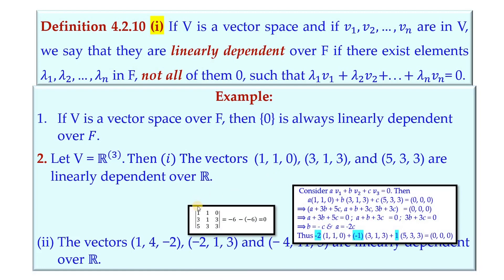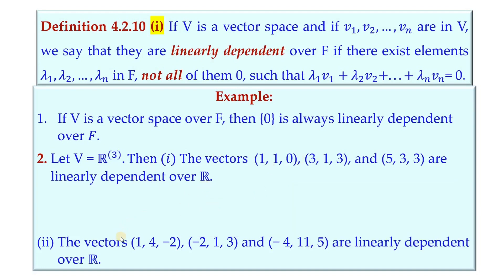Another method — applicable when given 3 vectors in R³ — is to form the determinant of the matrix with these vectors as rows. If the determinant equals zero, we can conclude the vectors are linearly dependent. For example, the vectors (1, 4, −2), (−2, 1, 3), and (−4, 11, 5) are linearly dependent over R in R³.